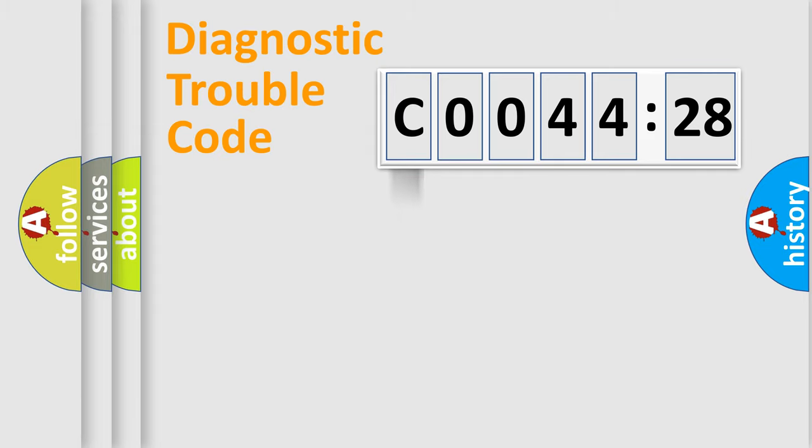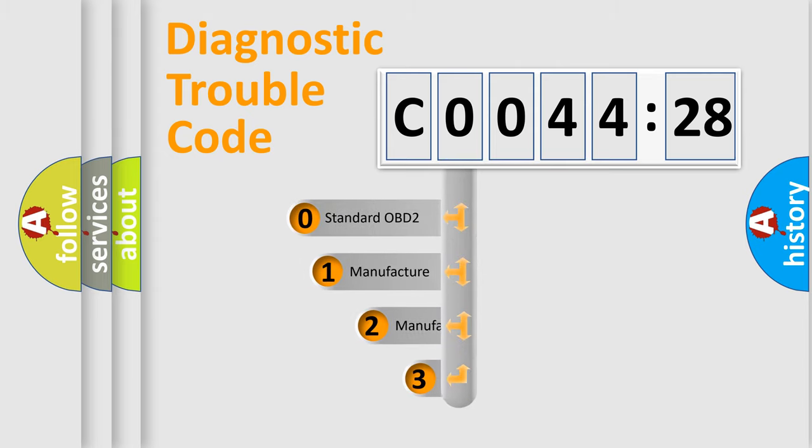Powertrain, body, chassis, network. This distribution is defined in the first character code.